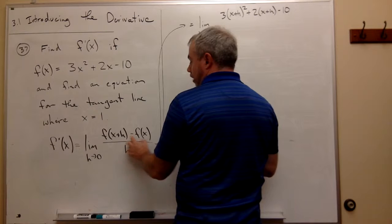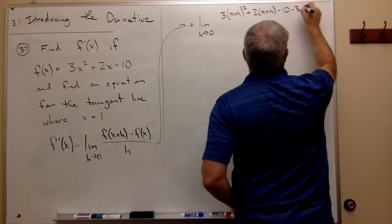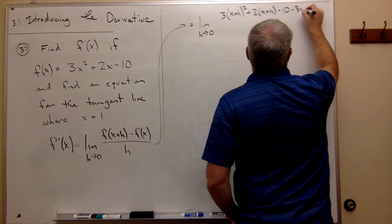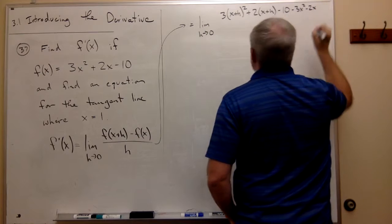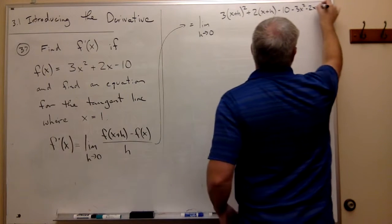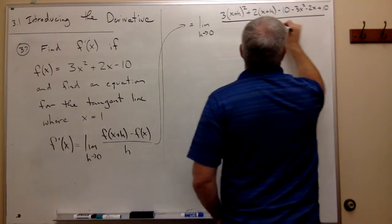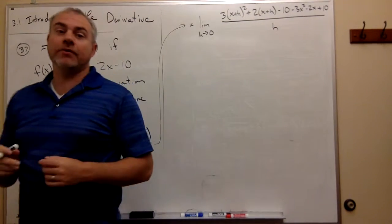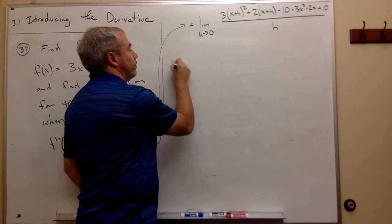Then we want to subtract f(x). We want to subtract 3x², subtract 2x, and subtract -10, which is adding 10, all over h. Now we need to do a little bit of simplification work. Let's rewrite this.